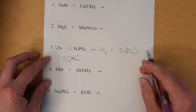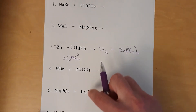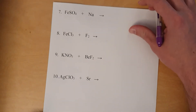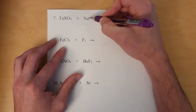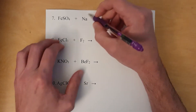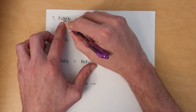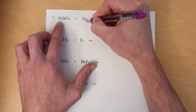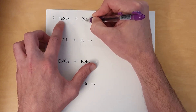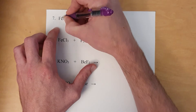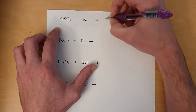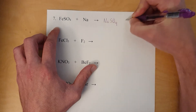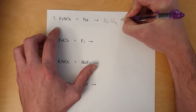Let's look at another single displacement reaction. Like switches with like — the pure element is sodium, which is a metal and a positive ion. Iron is also a positive ion. So the sodium goes here and the iron goes here, meaning sodium pairs with sulfate and iron becomes a pure element by itself.